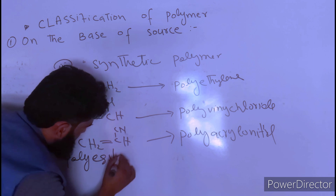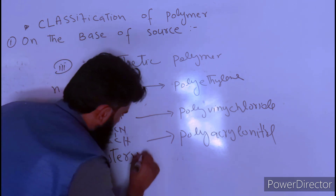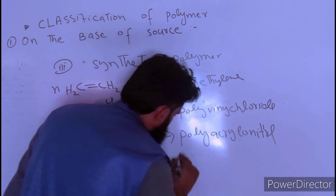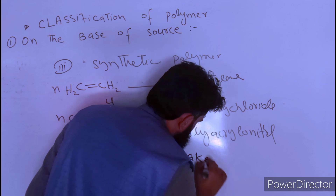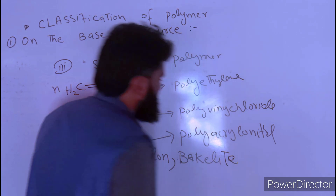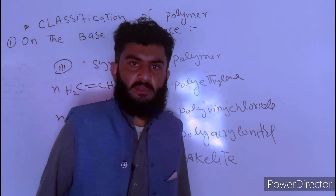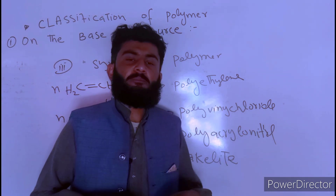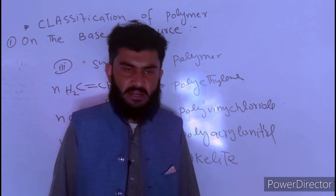Other examples of synthetic polymers include polyester, nylon, Bakelite, and polyphenyl resin, among many others.